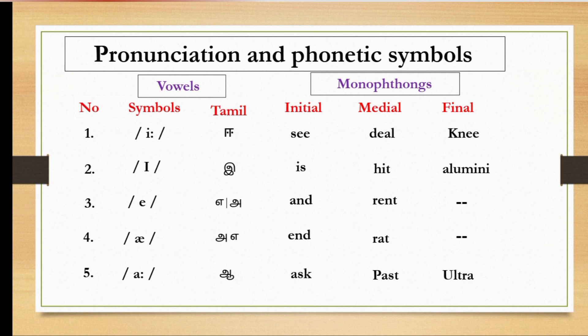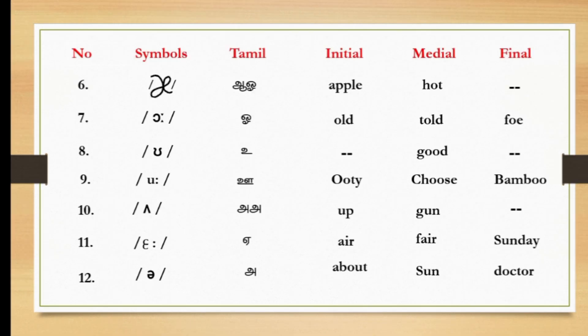Fifth one, aah, as in ask, past, ultra. Next, sixth one, aah. It also has two sounds. One is aah, another one is o, as in apple, hot. Seventh one, ho, as in hold, told, for.